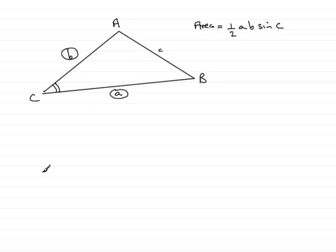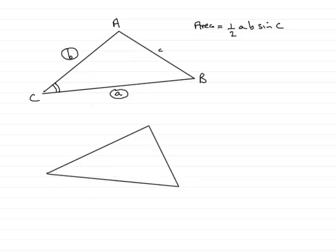Let's try this with a simple example. Let's suppose we have a triangle something like this. Let's suppose that this side is 4 centimetres and this is 5 centimetres. We're given two sides, and the included angle is this one — let's say that this angle is about 32 degrees. It's not drawn to scale, but let's work out the area.